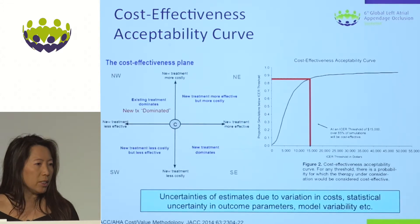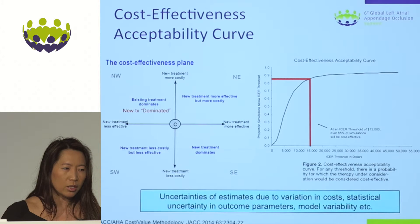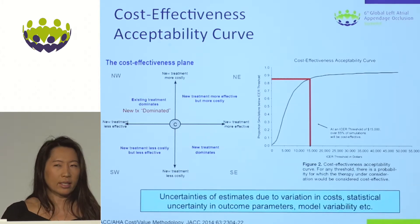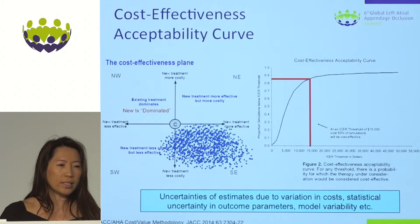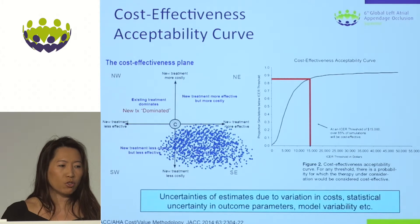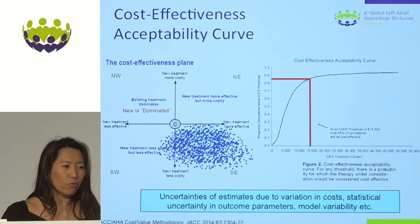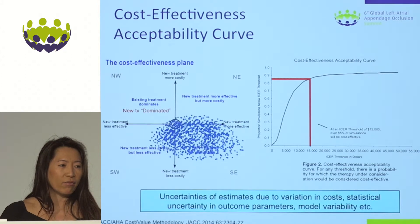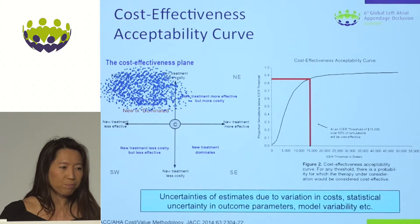The cost-effectiveness acceptability curve is derived from the cost-effectiveness plane, which is essentially a scatter plot based upon 10,000 simulations. These dots are plotted on the x-axis for clinical efficacy and the y-axis for cost — upper being more expensive and to the right being more effective. Ideally for a new therapy, you want results in the southeast corner, meaning the therapy is more effective and cheaper — that means it dominates the old therapy. What you don't want is the northwest corner, meaning the therapy is more expensive and less effective. In many cases what you'll see is a therapy that is more effective but also more expensive, landing in the northeast corner.